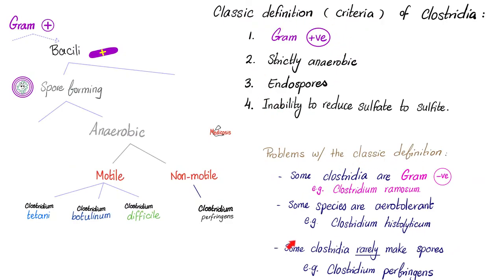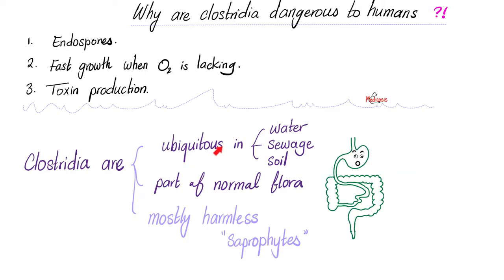Clostridia are everywhere around you — water, sewage, soil, everywhere. They are part of normal flora. Clostridium botulinum is part of the normal flora, especially in babies, because they have no competition from other bacteria whatsoever, so they predominate the gut of babies. In adults, they live in your gut but are competing with a gazillion other flora and bacteria, so they are overwhelmed. Why are they dangerous to humans? Spores, toxins, and anaerobic growth.